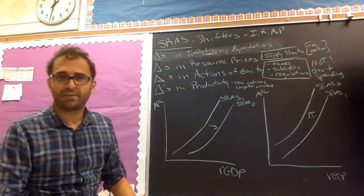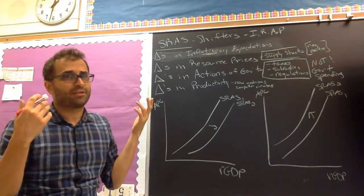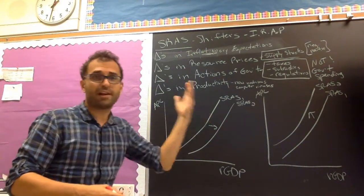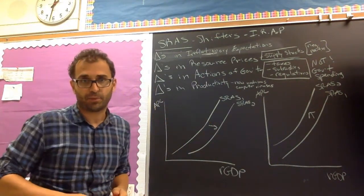The last one is change in productivity. This is pretty obvious. If there's a machine that makes you produce more, aggregate supply to the right. If there's a computer virus, aggregate supply to the left. Pretty simple. So IRAP. Don't forget. Write them down. Keep it out.